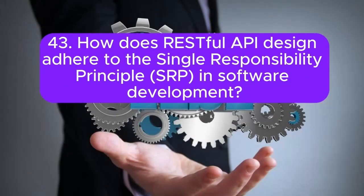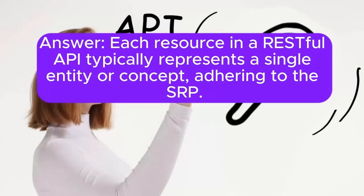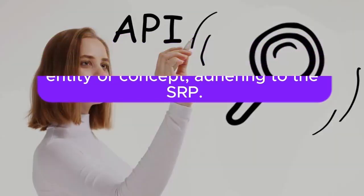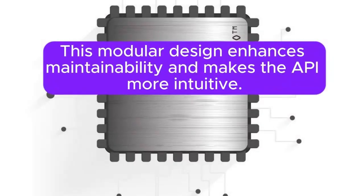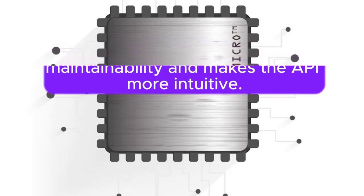Question 43: How does RESTful API design adhere to the Single Responsibility Principle (SRP) in software development? Each resource in a RESTful API typically represents a single entity or concept, adhering to the SRP. This modular design enhances maintainability and makes the API more intuitive.